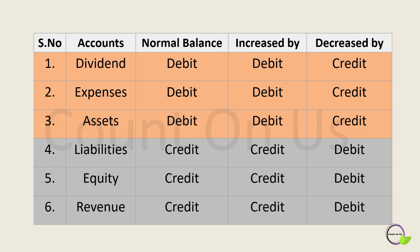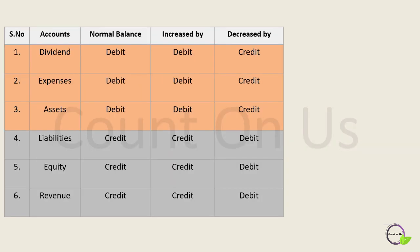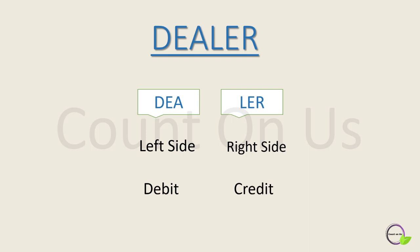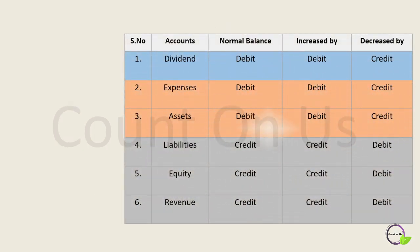If you look at the first letter of all six accounts, you will get the word DEALER. In that word, the first three letters are on the left side, so they are always debit balances. The remaining three letters are on the right side, and those accounts are credit balances.